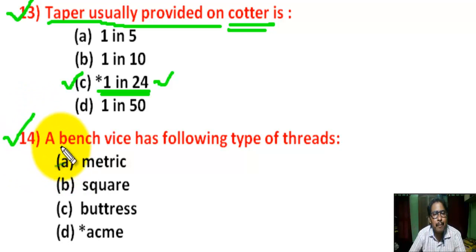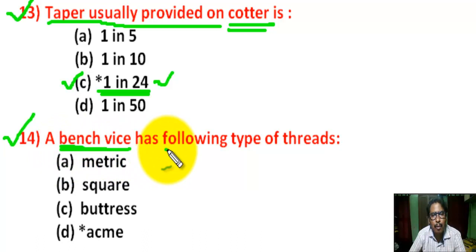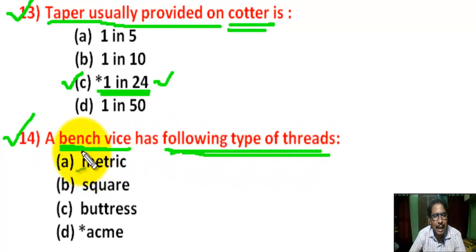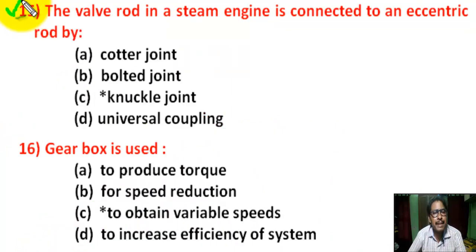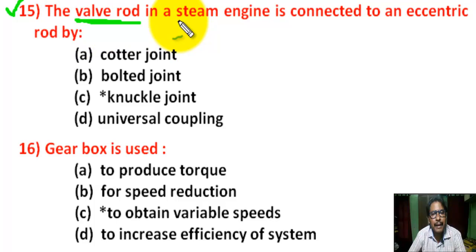Question number 14: a bench vice has the following type of thread. There are 4 options. Correct answer is D: Acme thread.